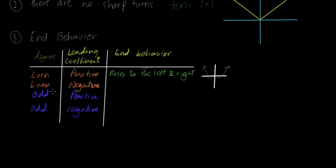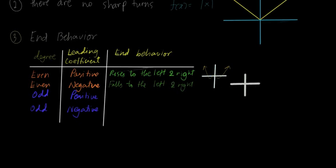Kapag even tapos negative, it falls to the left and right. Yung left and right — ito yung left, ito yung right — parang negative infinity and then positive infinity. So ano naman itsura? Kapag even tapos negative, yung itsura naman ito. It falls — pwedeng ganito yung itsura nung graph natin.